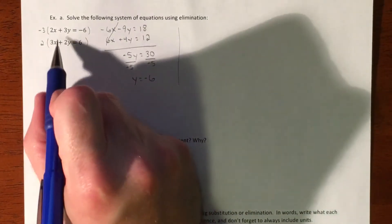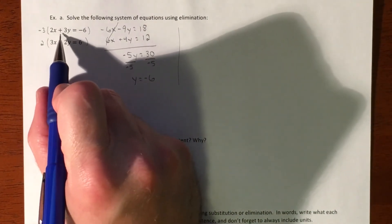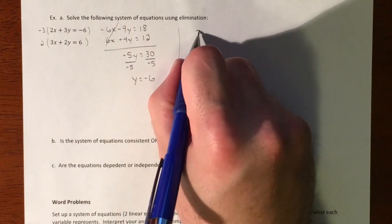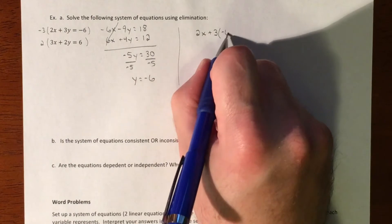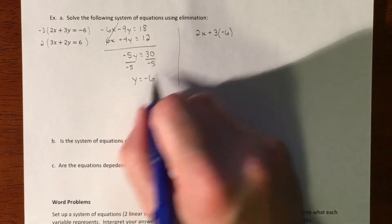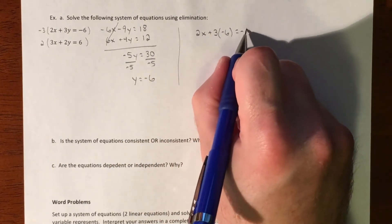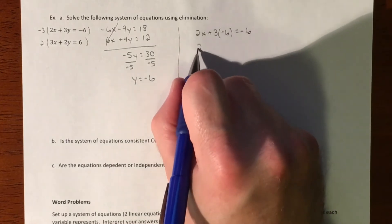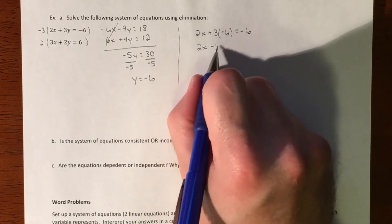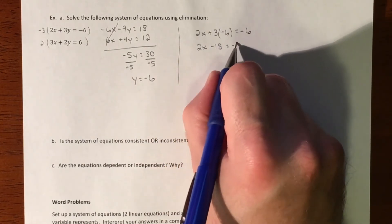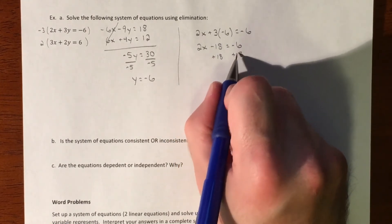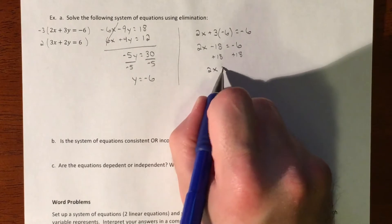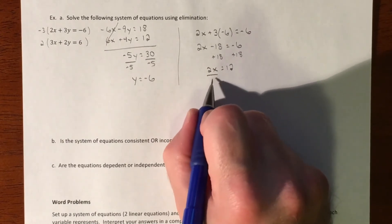Then let's go back to one of the originals. Maybe we take the top one, so we'll plug in y. So 2x plus 3 times negative 6 for your y - that's what we just found - equals negative 6. So that's going to be 2x minus 18 equals negative 6. We'll add the 18 over, so 2x equals 12.